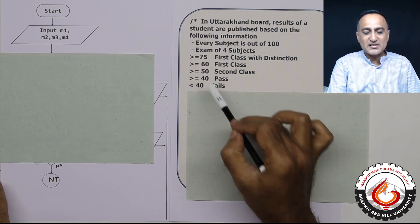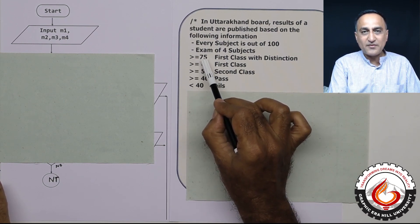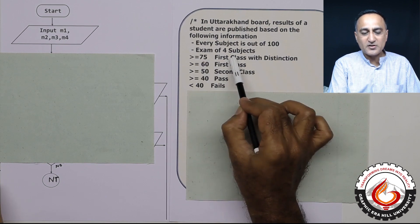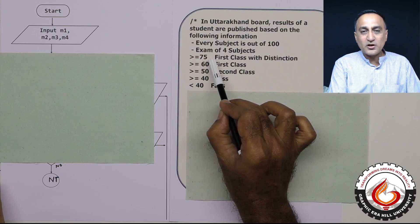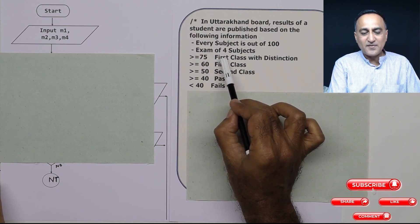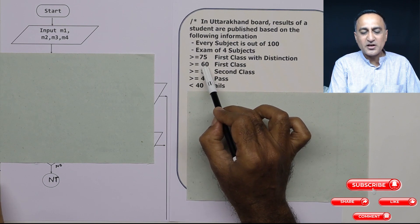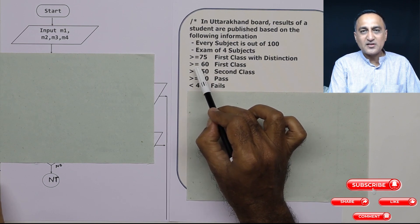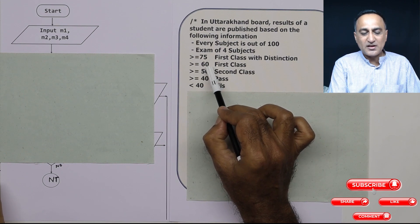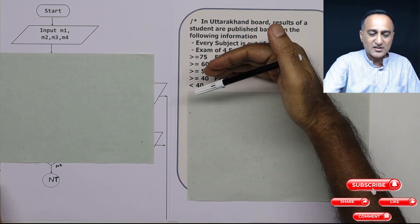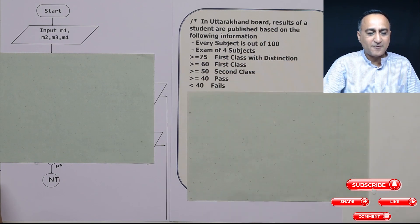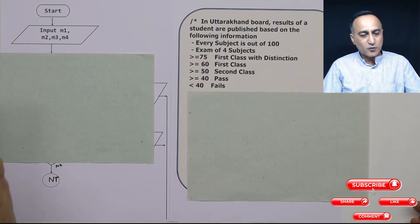Anything above 75 and less than or equal to 100 is going to print first class with distinction. Once we check whether a person has got greater than or equal to 75, if that condition is false, then only we come here and check whether that person has got greater than or equal to 60 — meaning it's only possible if they got between 60 and 75. The same discussion continues for second class, pass class, and fail. Let's see how this flowchart is developed and transformed into code.